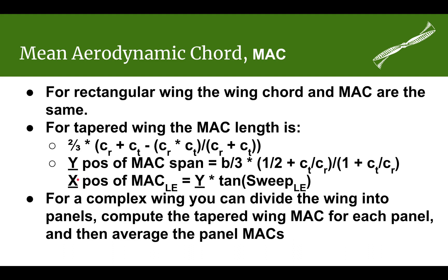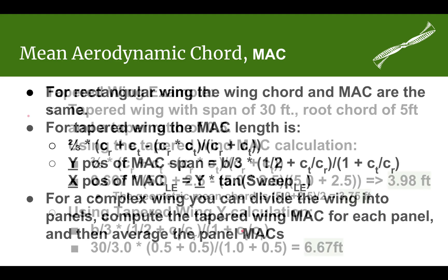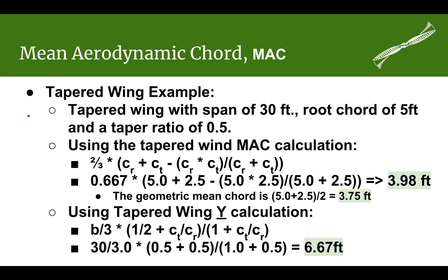What if you have a more complex wing — maybe an elliptical wing or a wing with several tapered sections, like on most airliners which have two or three tapered sections? We can handle that by computing the tapered MAC for each section and then averaging those sections together.